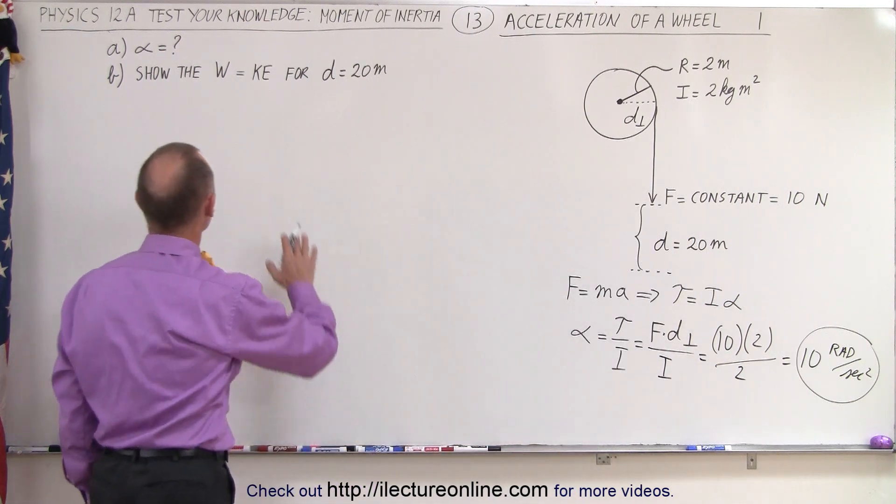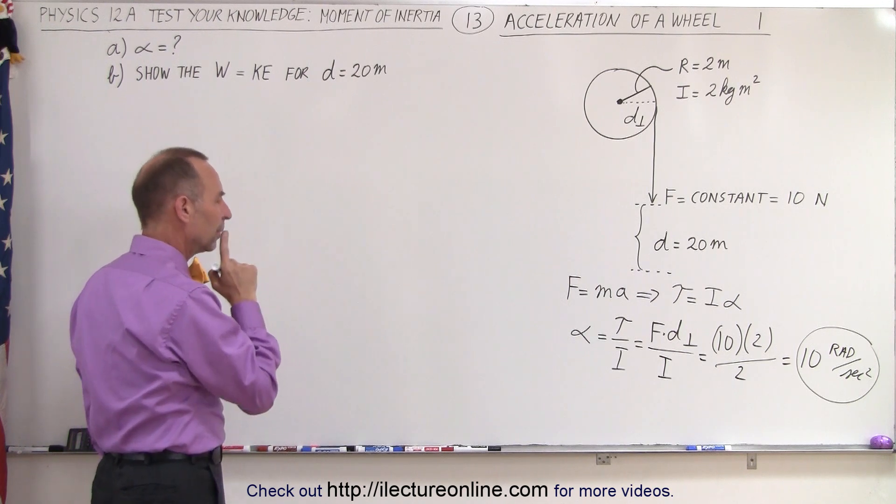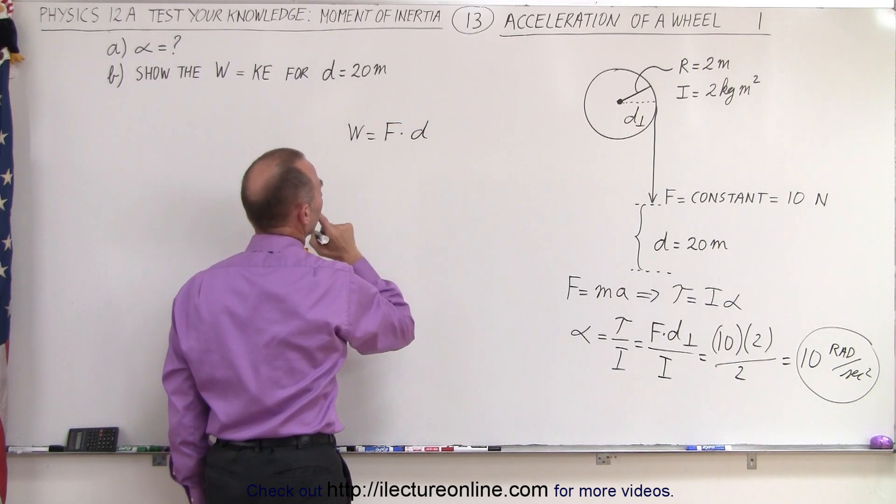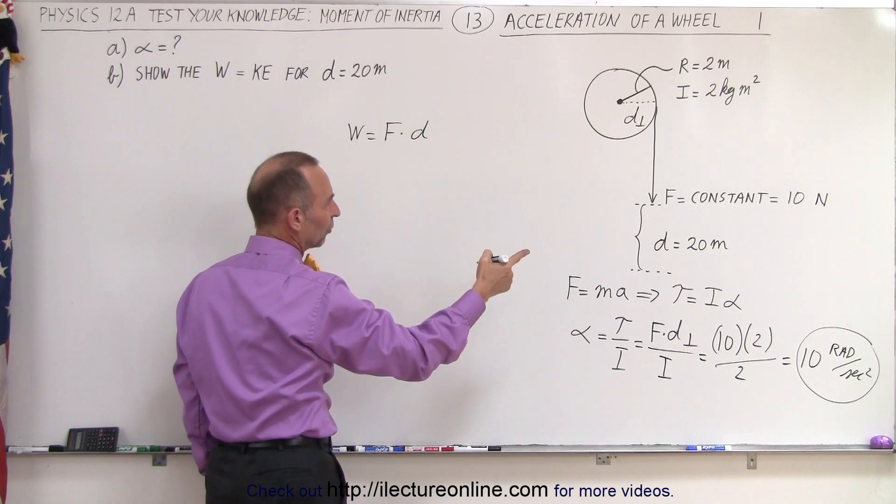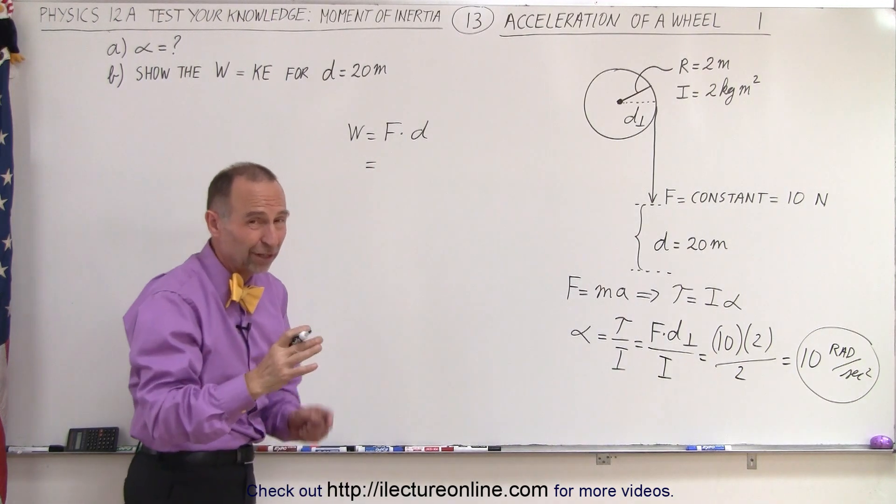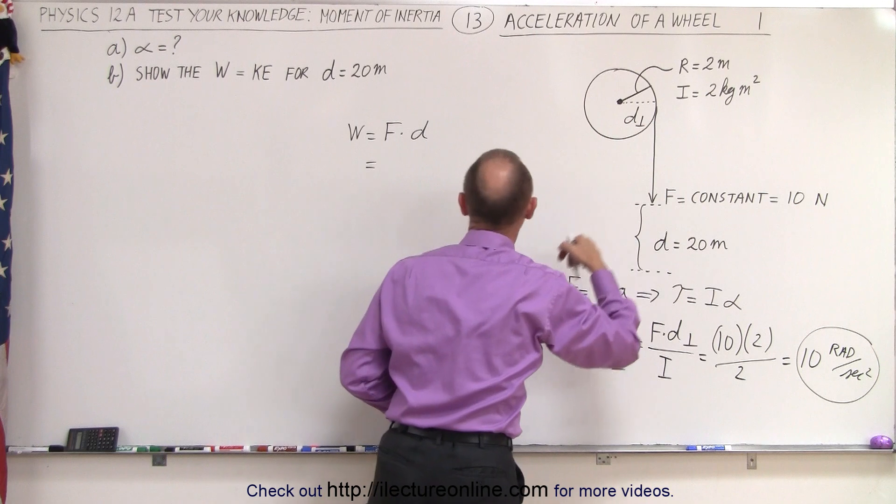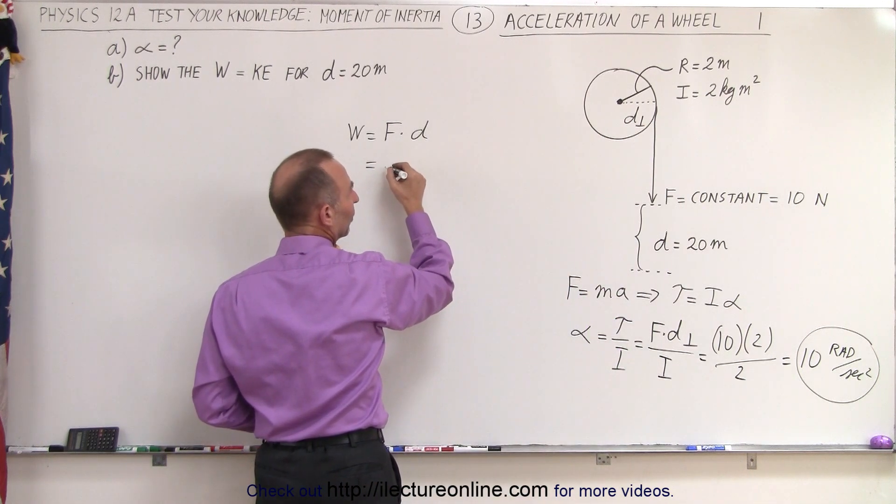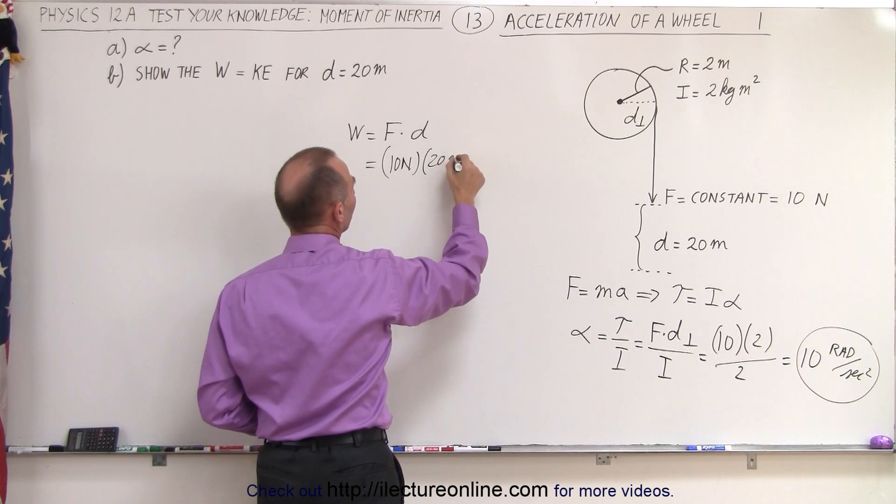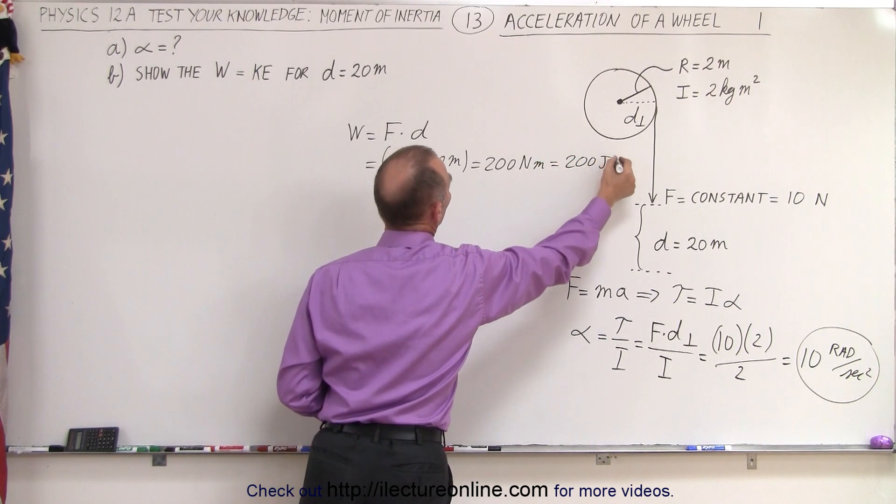Now we're ready to answer the second question, part B. Show that the work done is equal to the kinetic energy. Well, the work done is equal to force times distance. And so we have a force of 10 newtons applied for a distance of 20 meters, times the cosine of the angle between them. But of course, the applied force is in the same direction as the displacement. So we can say that we have a force of 10 newtons and a displacement of 20 meters, which is equal to 200 newton meters, which is equal to 200 joules.